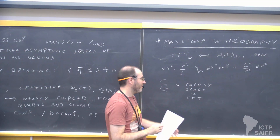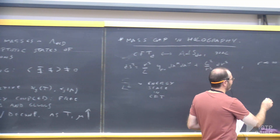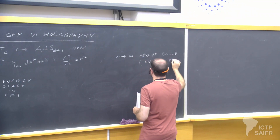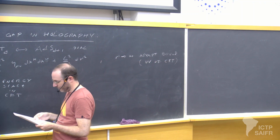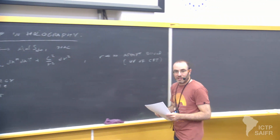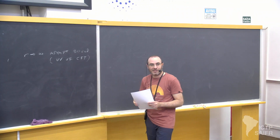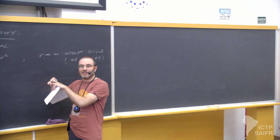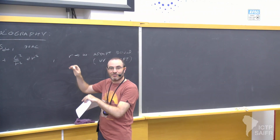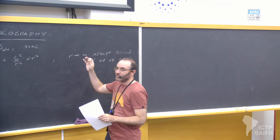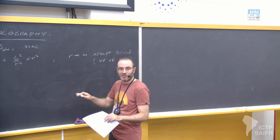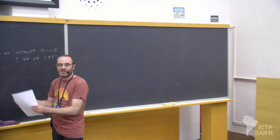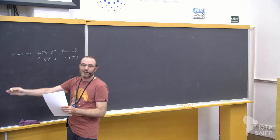The radial coordinate is related to the energy scale of the dual field theory: R over L squared is, roughly speaking, the energy scale in the CFT. So the asymptotic boundary corresponds to the ultraviolet, and when R goes to zero, you are going to the infrared. If we have a mass gap, all the degrees of freedom have energy at least equal to the mass of the lightest state, so below this mass there are no degrees of freedom.